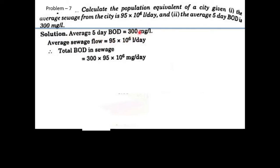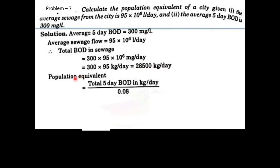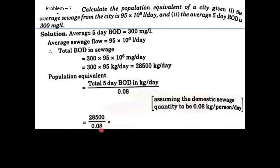Average sewage flow = 95 × 10^6 liters/day. Total BOD = average sewage flow × BOD = 300 × 95 × 10^6. Population equivalent = total BOD of sewage (28,500 kg/day) divided by the standard BOD of domestic sewage per person per day.